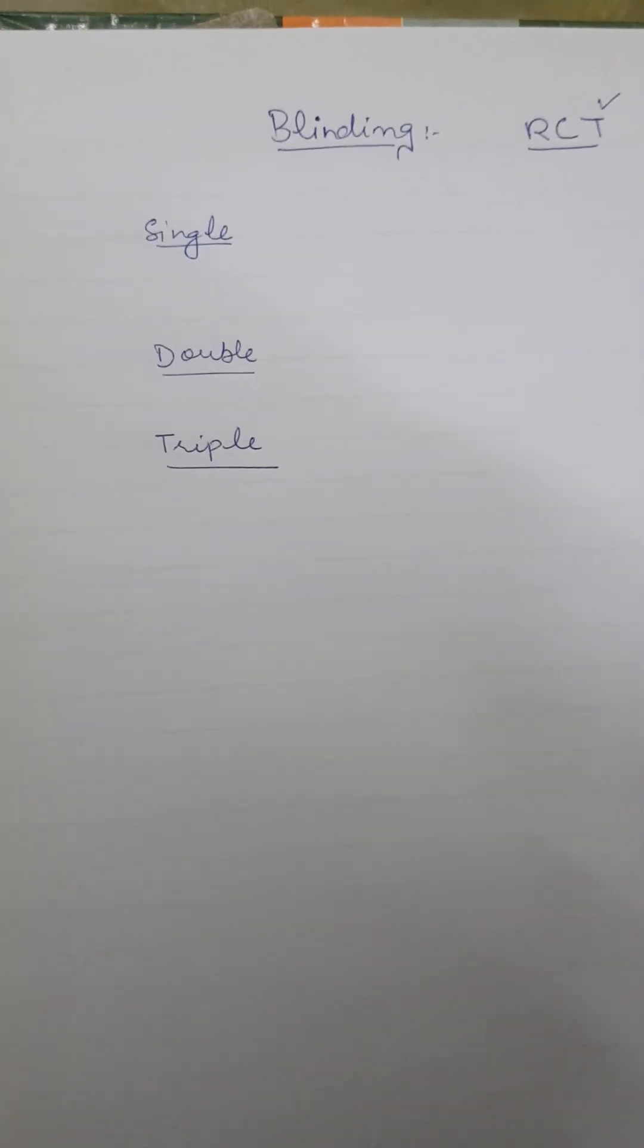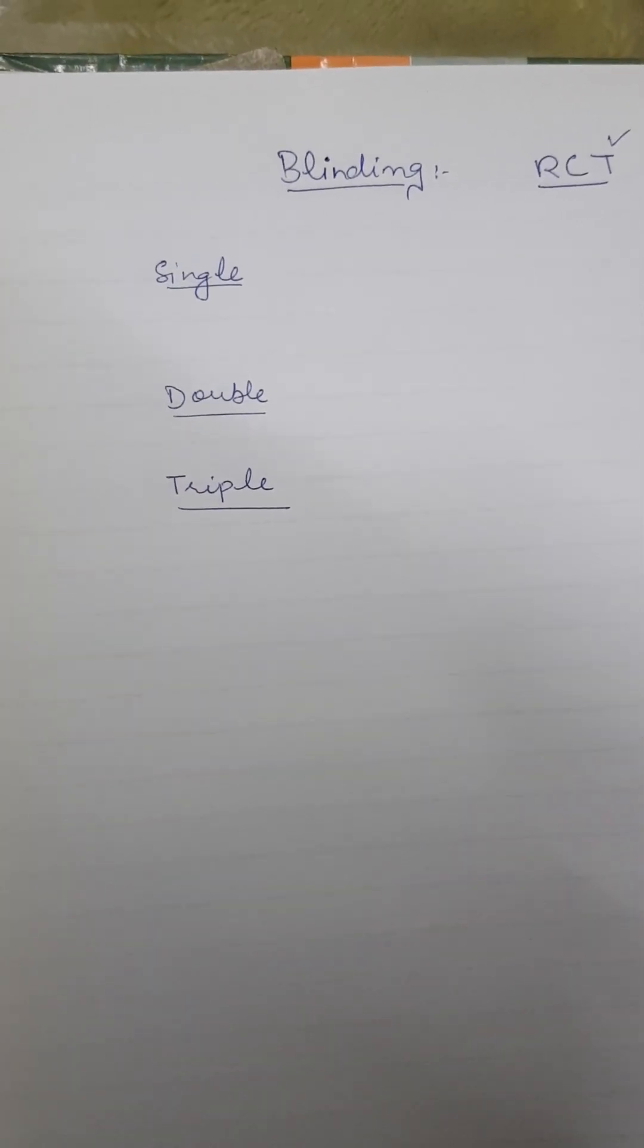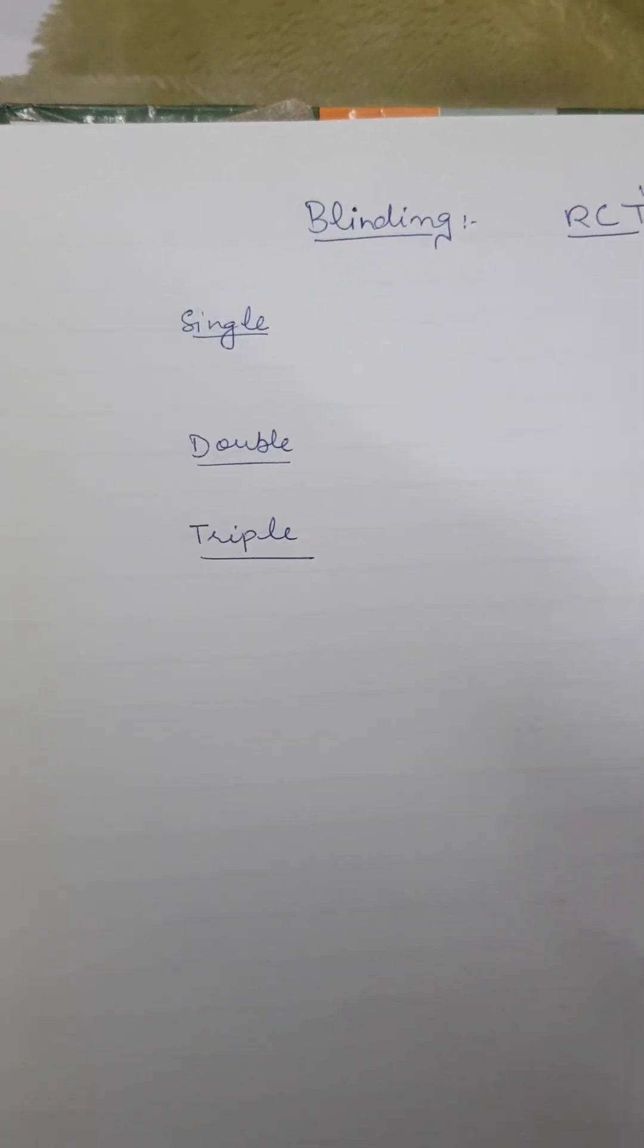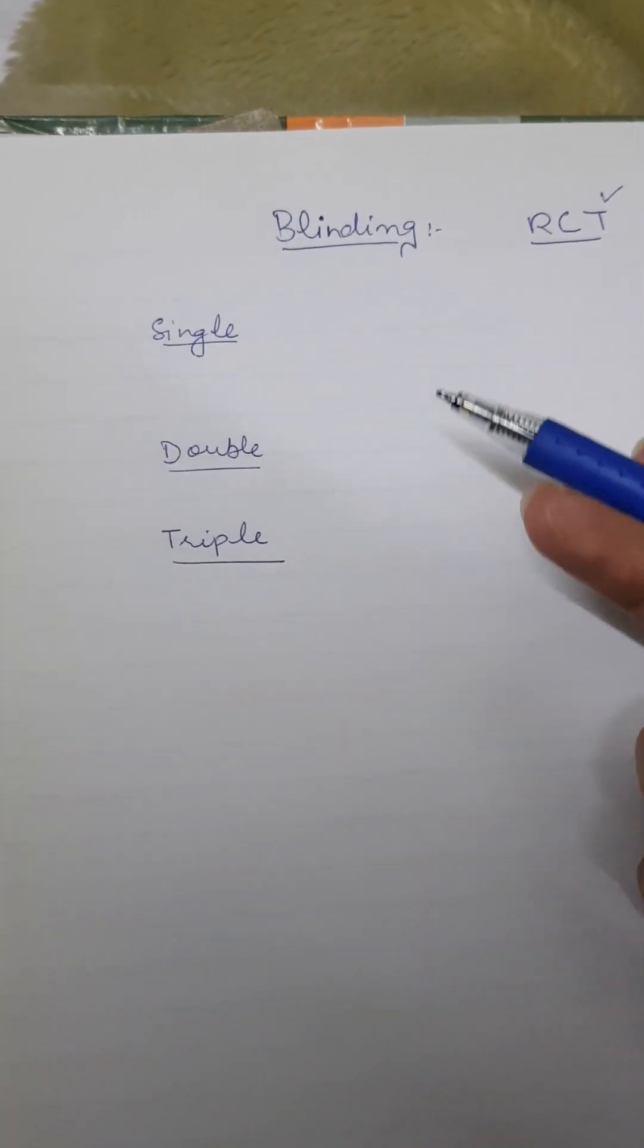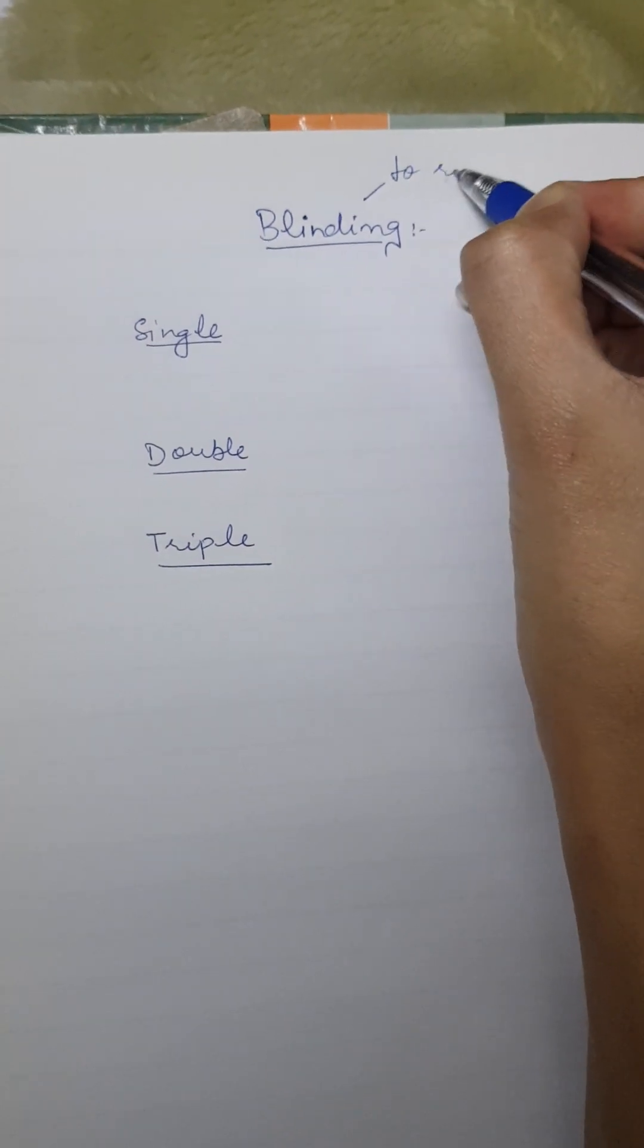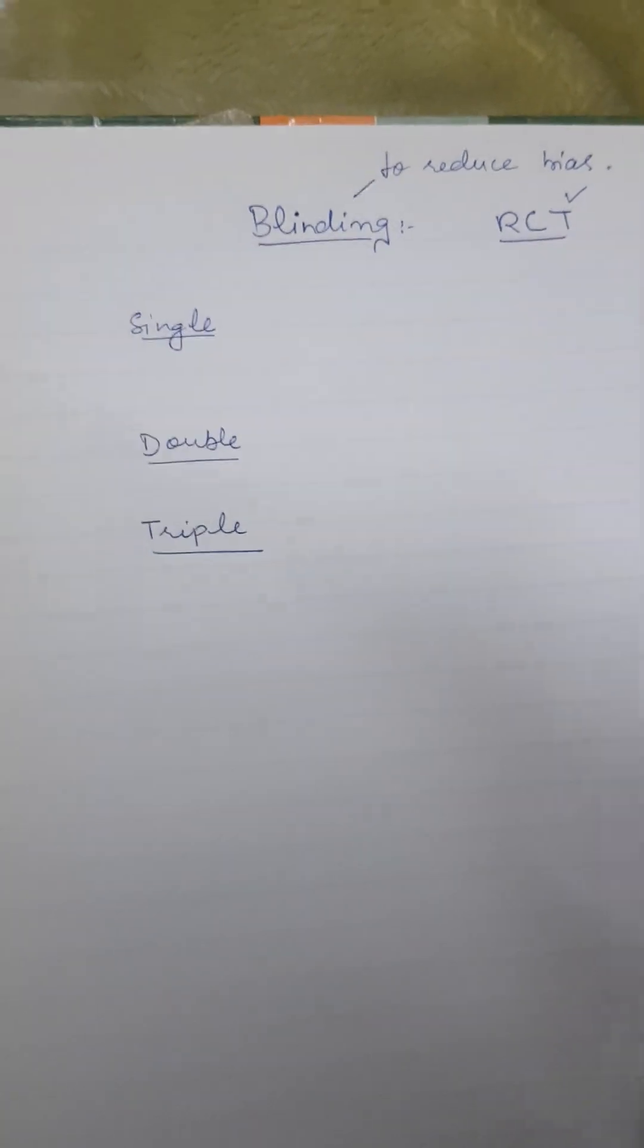Now we know that when there are RCTs, there are one experimental group and one control group. In both groups, subjects are divided into the experimental and control group randomly. So now blinding, why do we do blinding? If it is blinding, blinding is done basically to reduce the bias. It is done usually to reduce the bias.